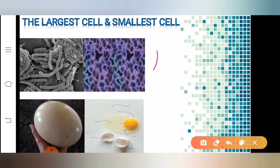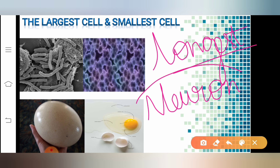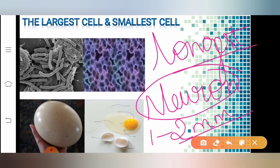Now let us talk about the longest cell. We have discussed the largest and smallest cell. The longest cell is the cell present in the nervous system — that is the neuron. The neuron is the longest cell, and its length ranges from 1 to 2 millimeters. So we have understood the largest cell, the smallest cell, and the longest cell present in organisms.